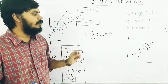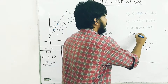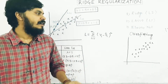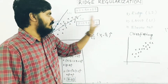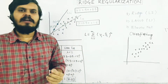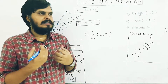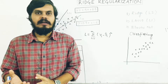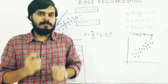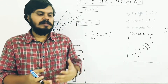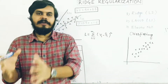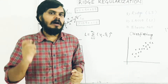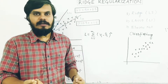Before starting the regularization part, let's discuss overfitting — a very famous concept in machine learning. Overfitting is the phenomenon where a machine learning model is performing exceptionally well on training data but not so well on the testing data. This means there is a lot of variance in your model — its performance on one dataset and on a different dataset gives completely different results. That is what overfitting is.